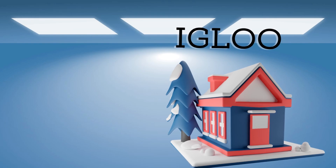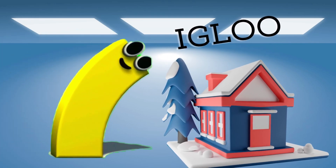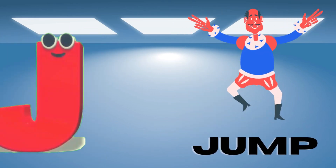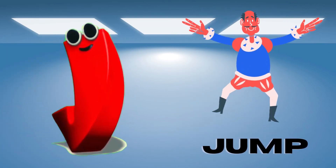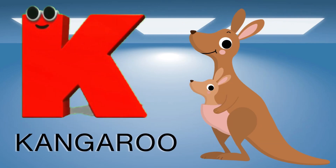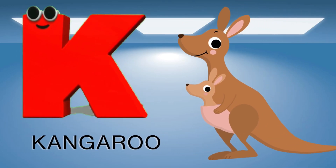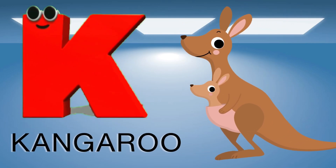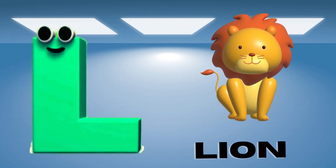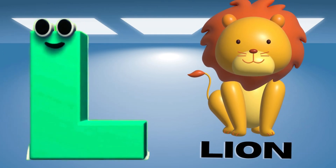I is for igloo, i-i-igloo. J is for jump, j-j-jump. K is for kangaroo, k-k-kangaroo. L is for lion, l-l-lion.